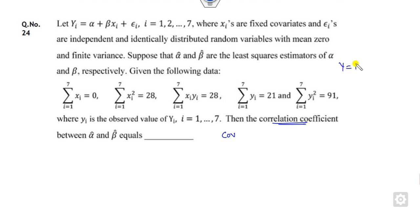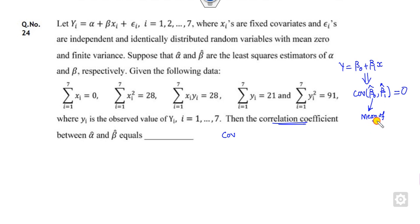I already discussed with you that if you have the regression equation like this, then the covariance between the estimator of beta-naught and beta-1 will be 0, provided beta-naught is the mean of y. That is the simple trick. It will be 0 when alpha is the mean of y.